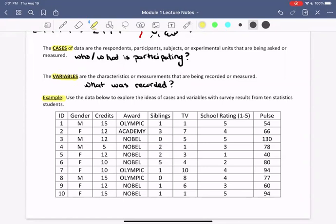So after you've done that, we can look at this example further. It says, use the data below in this table to explore the ideas of cases and variables with survey results from 10 statistics students. So right away, we have 10 statistics students is what we're told. So these 10 statistics students would be the cases of our data of our study.